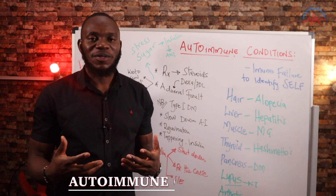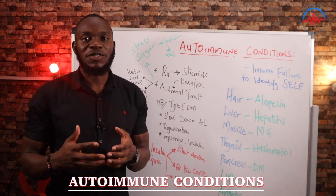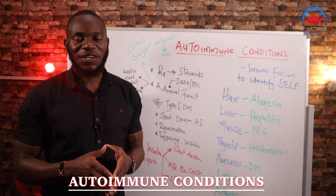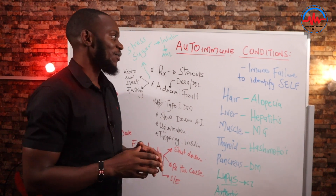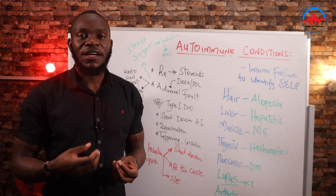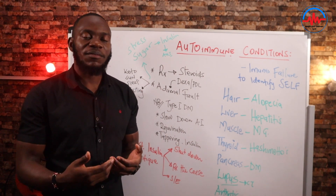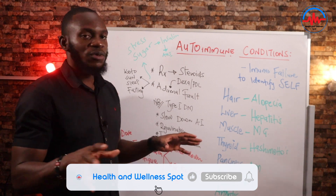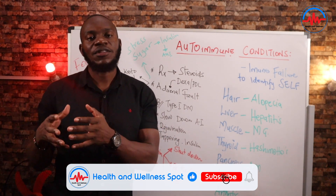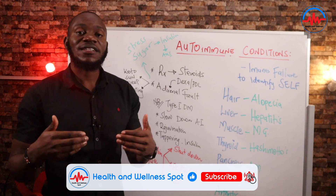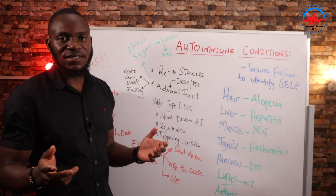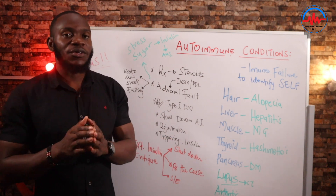We cannot talk about autoimmune conditions if we don't understand the nature of our immune system. How does the immune system work? That is the starting point. Our immune system, first of all, has to recognize self against invading. By self, I mean your own body cells. So before it starts protecting you, it has to identify these as the body's cells, then anything that is not self, it starts killing and destroying it — like cancer cells, like microbes.